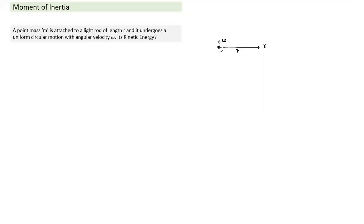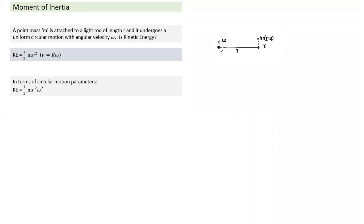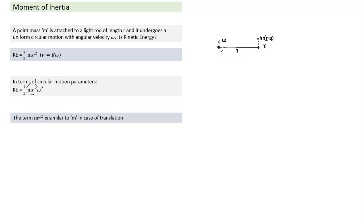The kinetic energy at any instant is one-half mv squared, where v equals r·omega. So kinetic energy can be written as one-half m·r²·omega². Comparing this to linear kinetic energy, the term m·r² is the rotational equivalent of inertia, called rotational inertia or moment of inertia.